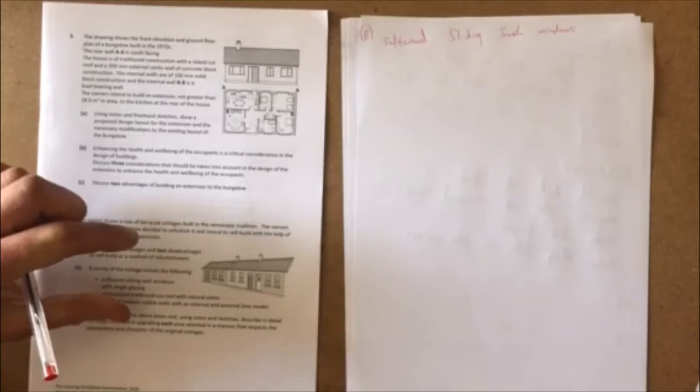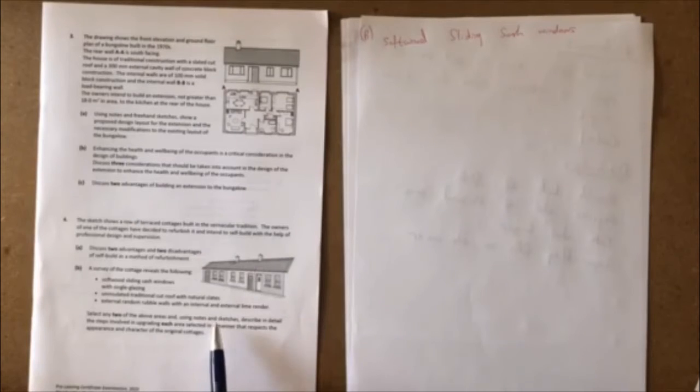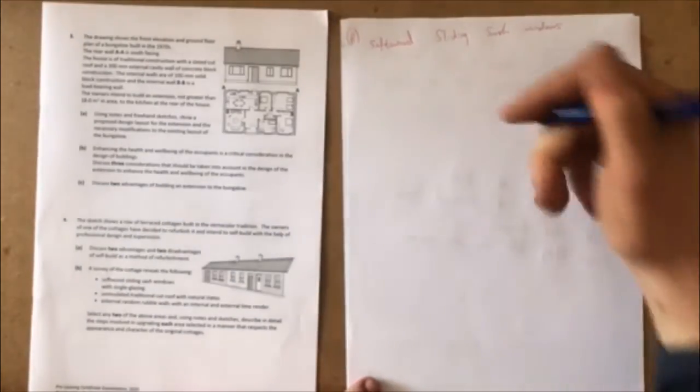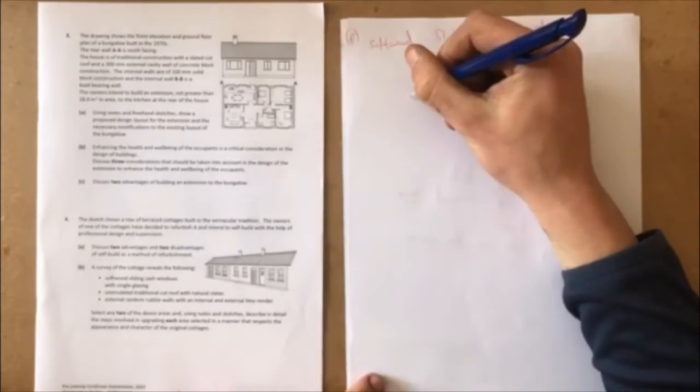Secondary glazing is also recommended for this dwelling as it significantly restricts heat loss and provides excellent soundproofing, triple glazing with a U value of at least 0.8 watts per meter squared kelvin. Secondary glazing should be designed to be invisible from the outside and therefore not detract from the period dwelling's character. So it's looking here for trying details that's involved in upgrading each, using notes and sketches.